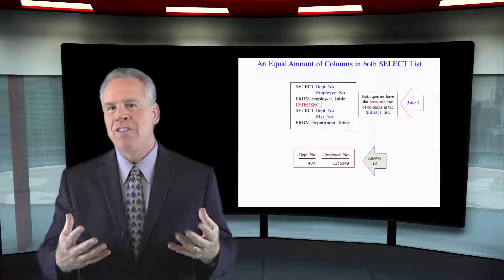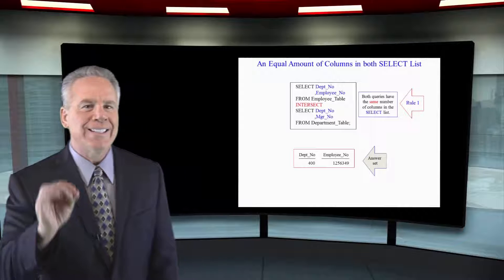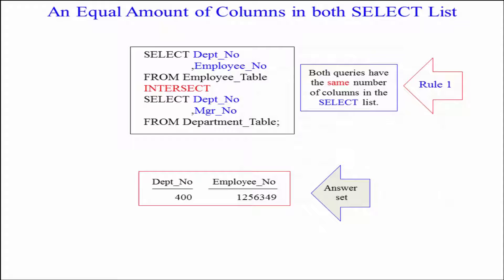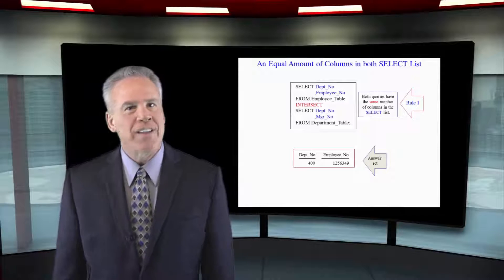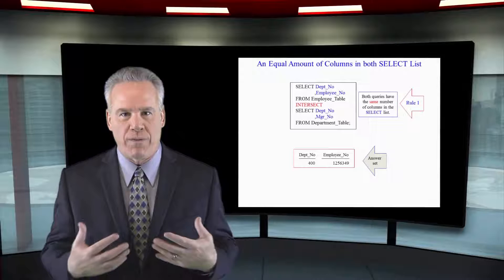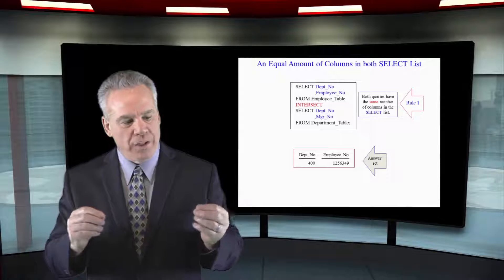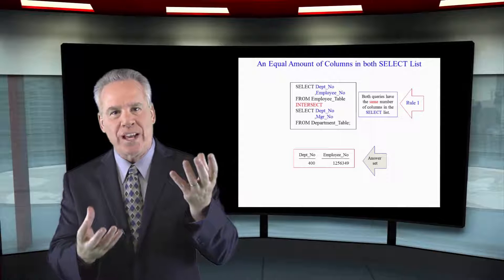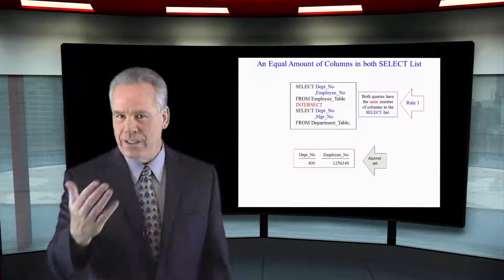Here's the way set operators work logically. There's always at least two queries: a top query, followed by a keyword (intersect, union, except or minus), and then a bottom query. Both queries run simultaneously, which makes them so powerful in a parallel processing system. They both deliver two different answer sets, and then those answer sets are compared and usually duplicates are eliminated.